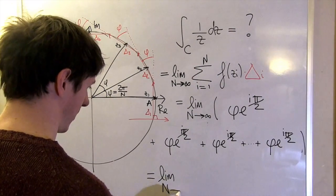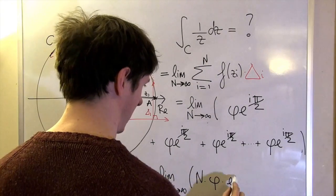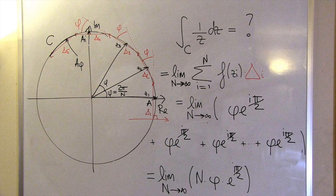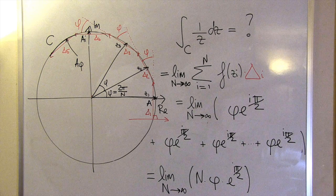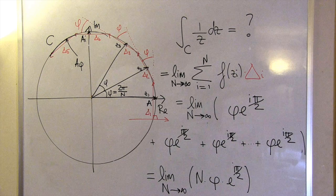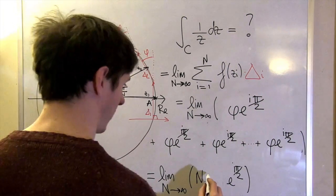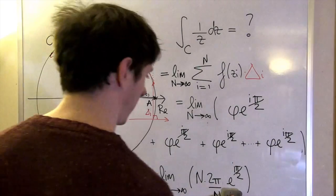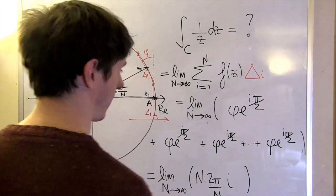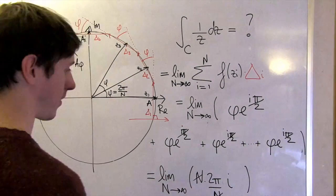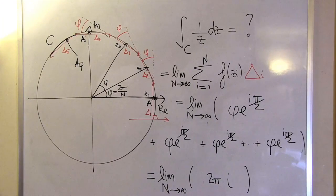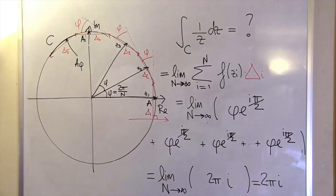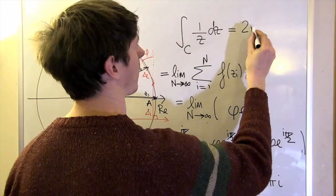That just means we have n times phi times e to the i pi over 2. Seems pretty simple, right? Well, it's not quite simple enough for me yet. Phi, which divides the circle up into equal sectors, is just 2 times pi over n, and e to the i pi over 2, well that's i by another name. That gives 2 times pi times i, and when we take the limit of this as n goes to infinity, nothing changes—it remains 2 pi i, which gives us our answer.